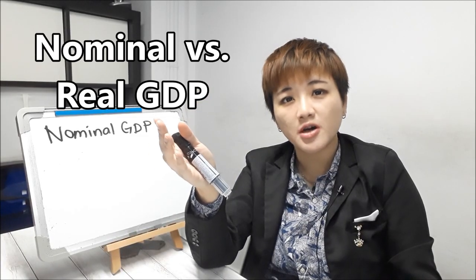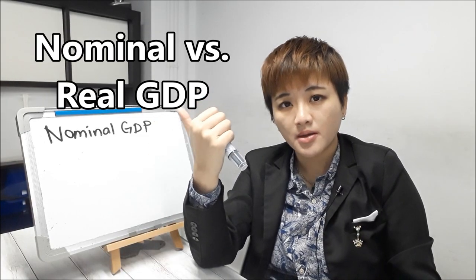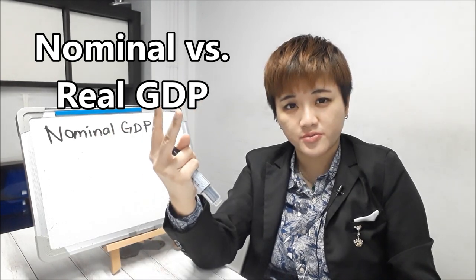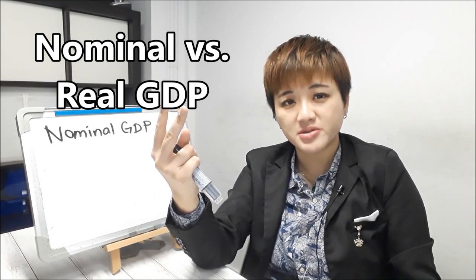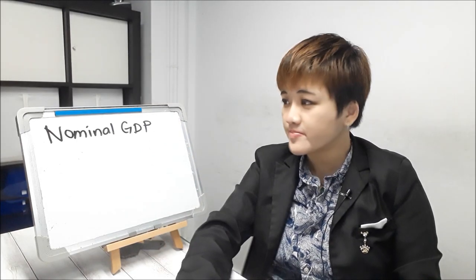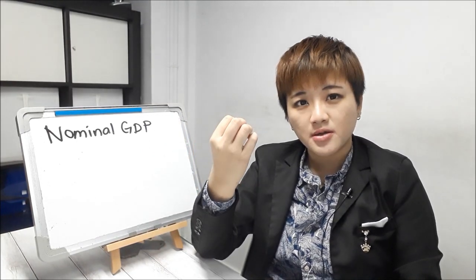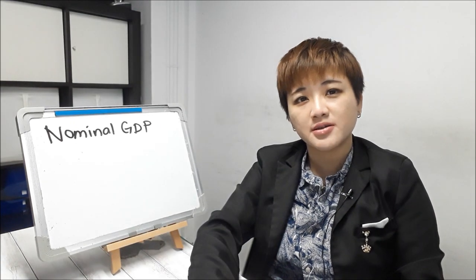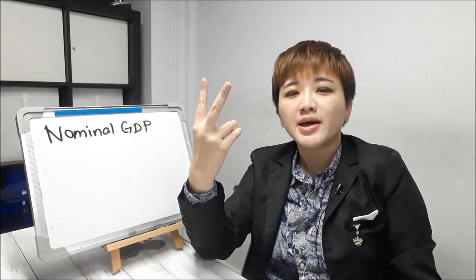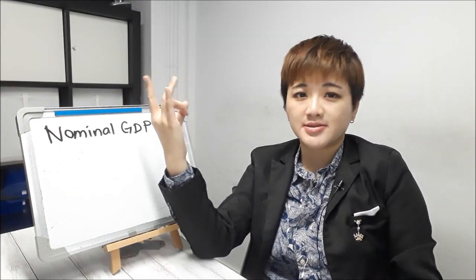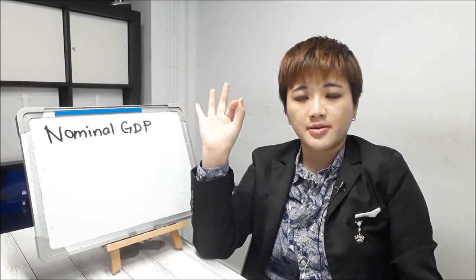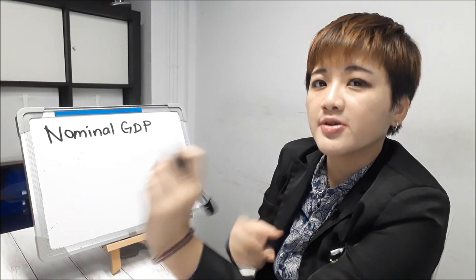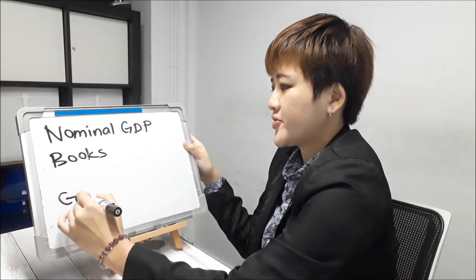There are two types of GDP you need to know. Number one, nominal GDP. Number two, real GDP, which is the most important one. But you need to learn both. So how is GDP computed and calculated? Let's say you have a country that only has two types of people: game addicts and bookworms. Because of that, this country only sells two types of stuff — books and games.